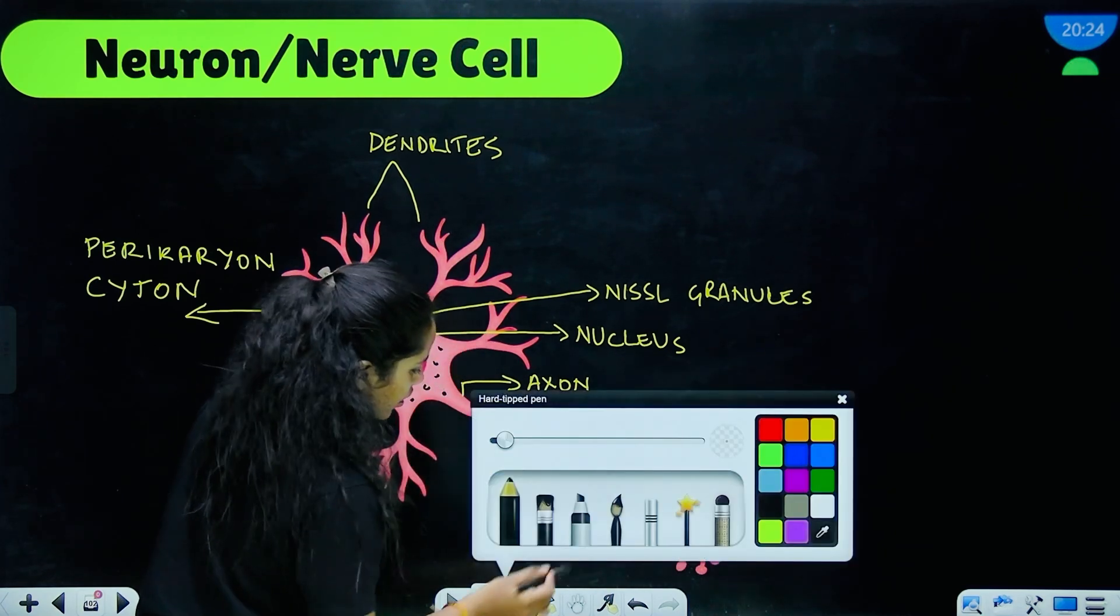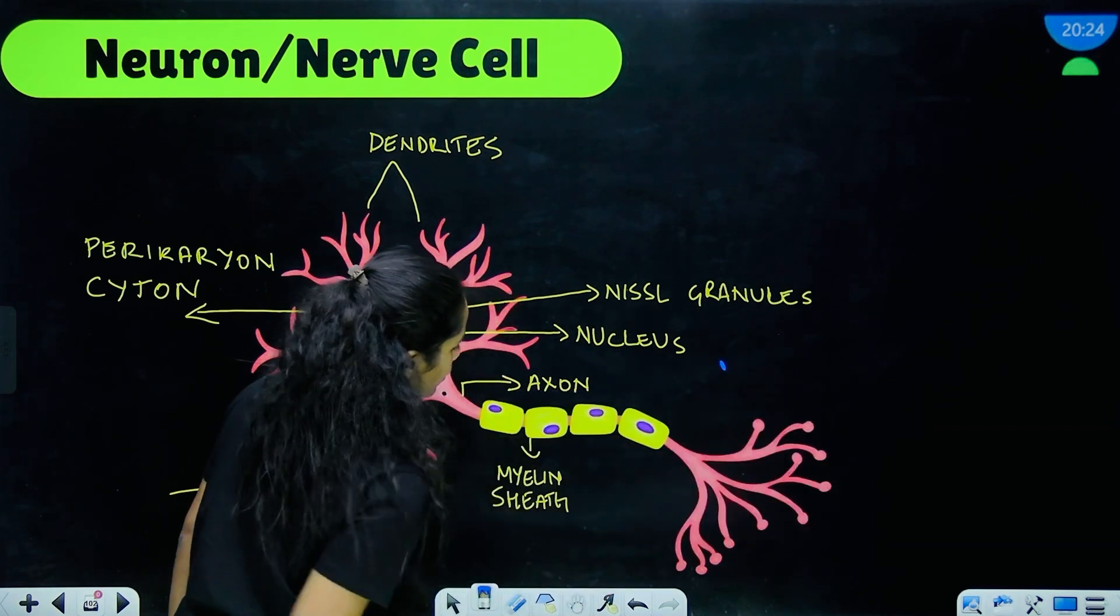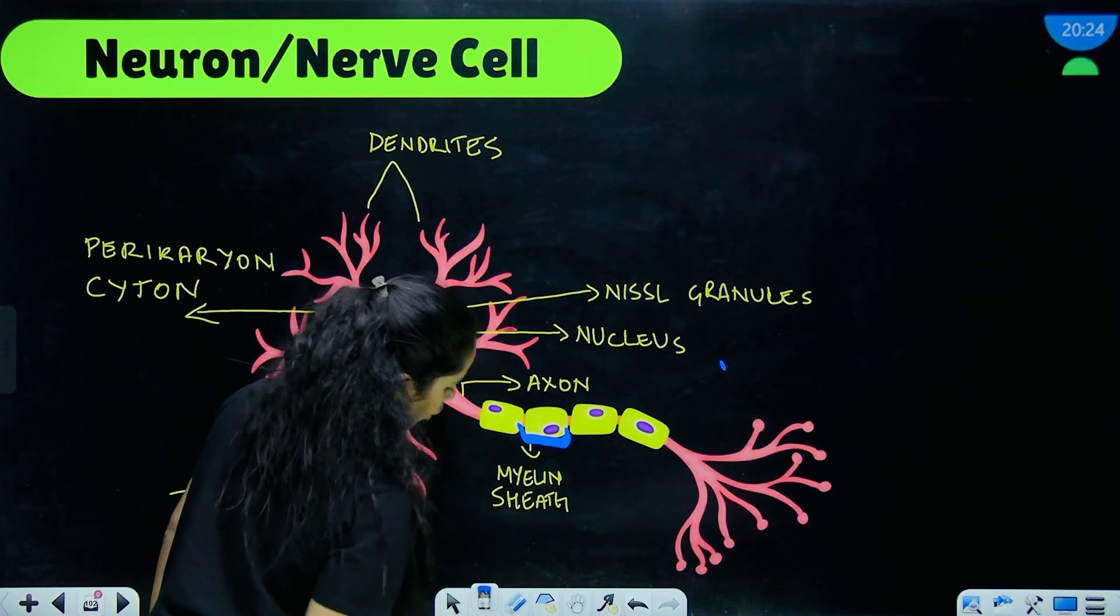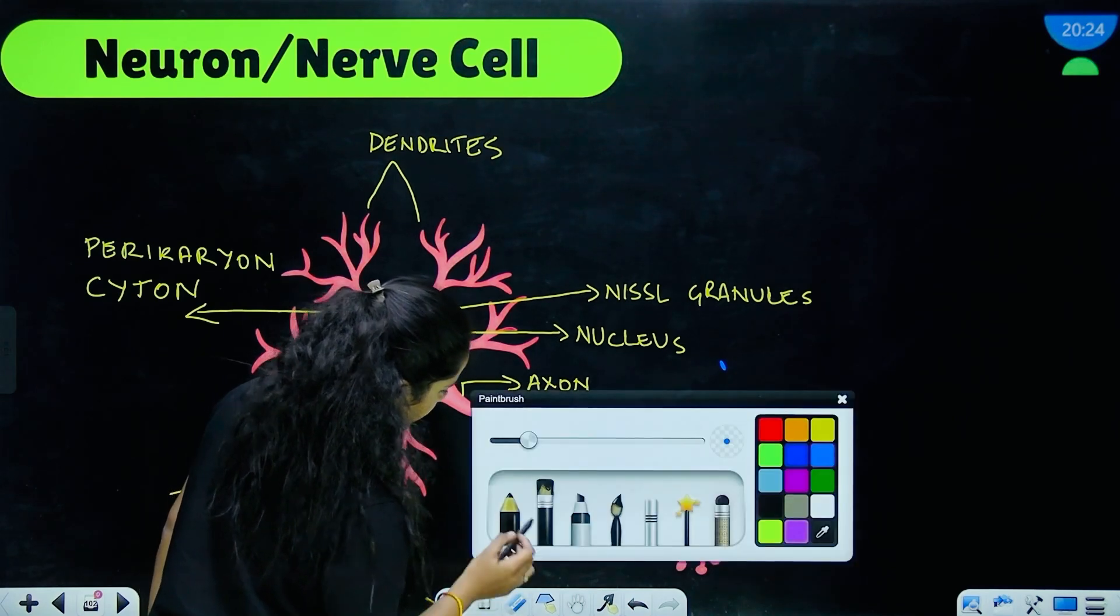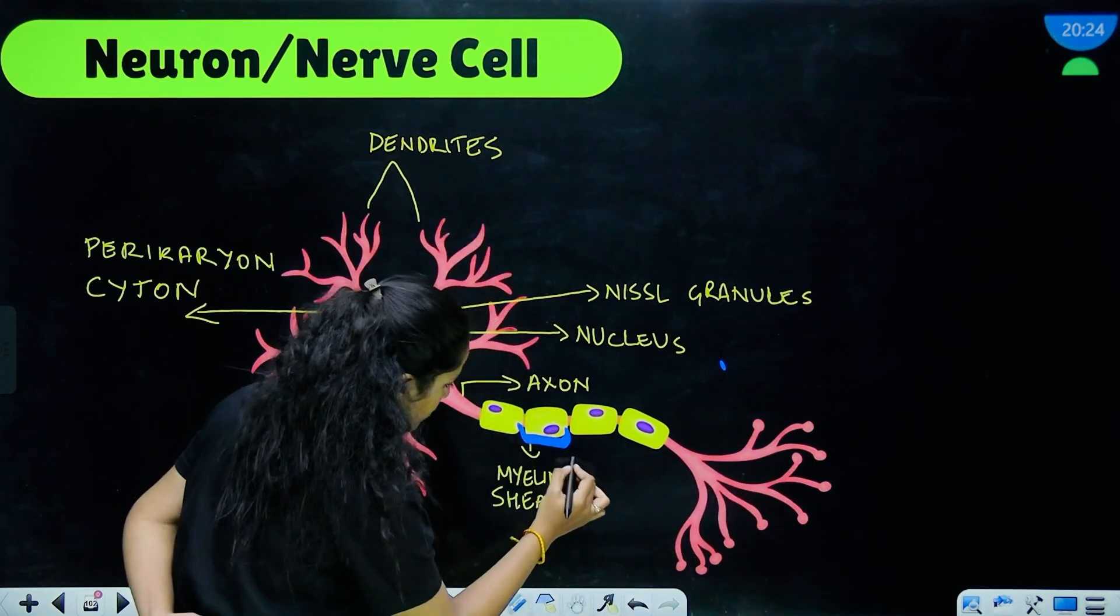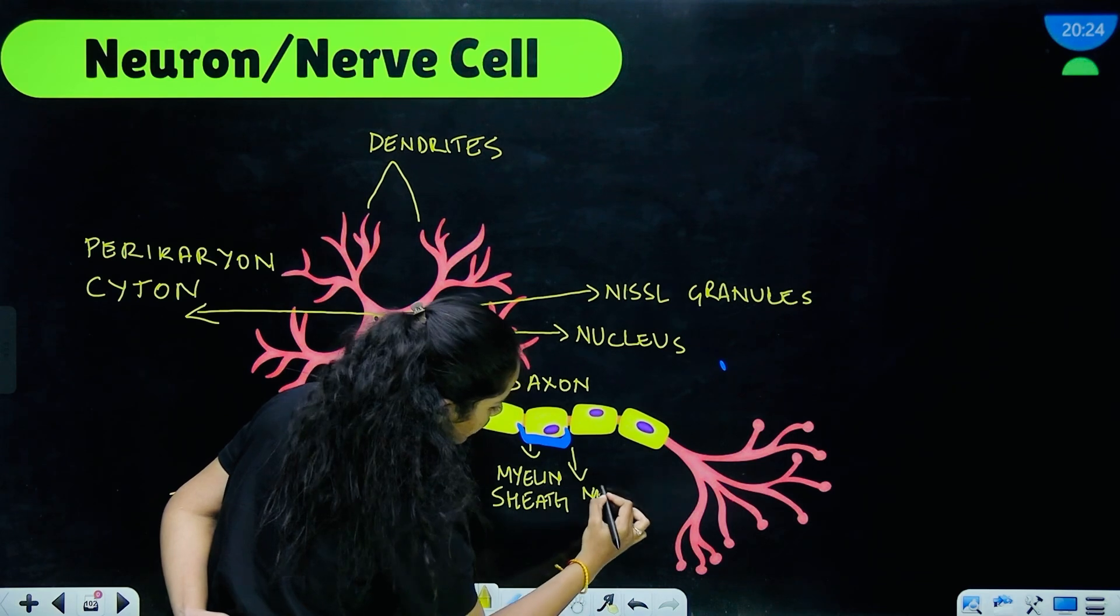And around this myelin sheath you also sometimes find a very thin layer of a membrane-like structure that is called the neurolemma. Both these serve as protection.